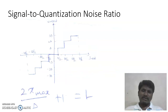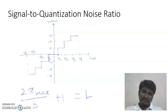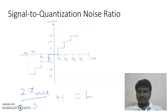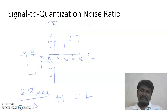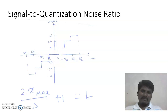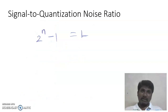We can relate the maximum input value x_max, the step size delta, and the number of quantization levels L. The relation is: 2·x_max / δ + 1 = L. In this example, 2 × 3δ / δ + 1 = 7, which confirms 7 levels. Here L is the number of quantization levels, delta is the step size, and x_max is the maximum input value mapped to the output.